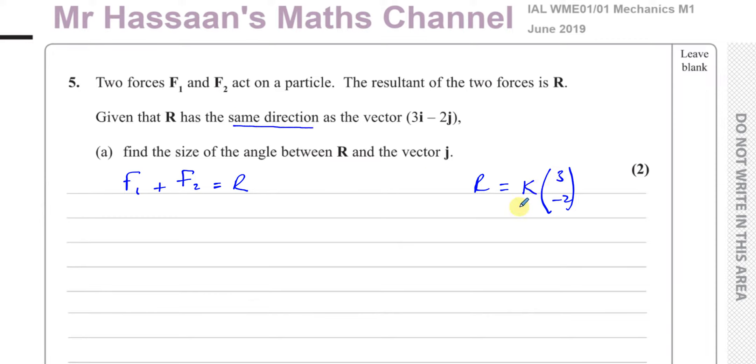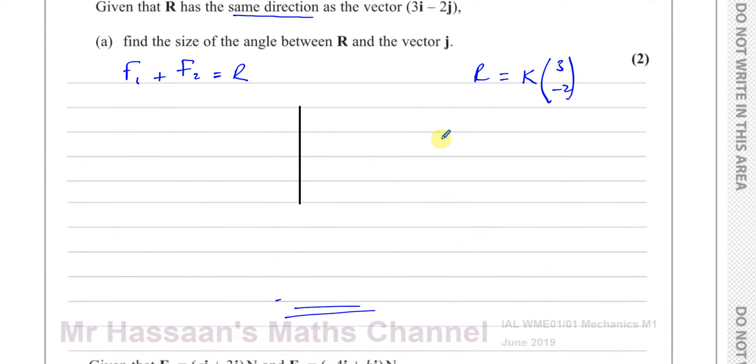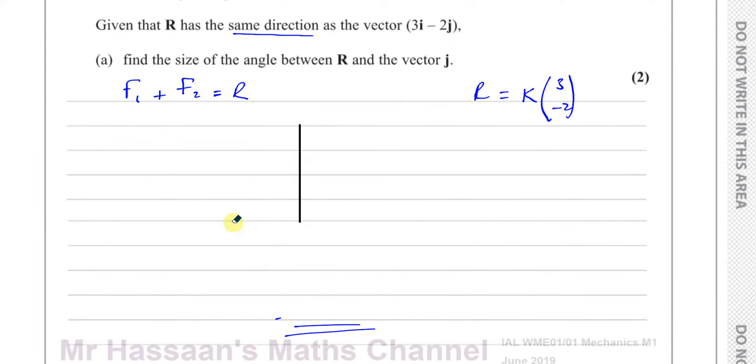It has the same direction means it's parallel. Vectors which are parallel to each other are not equal to each other, but they're equal to some multiple of each other. So R equals K times 3i minus 2j. I like to express my vectors in this form of column vectors. I find it much easier and neater when I'm doing my calculations. Then it says find the size of the angle between R and the vector j. First of all, the vector j is a unit vector which is going vertically upwards.